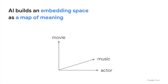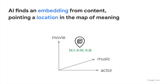Let's see how AI organizes data using embeddings. Once trained with specific content like text, images, or any content, AI creates a space called the embedding space, which is essentially a map of the content's meaning. AI can identify the location of each content on the map — that's what an embedding is.